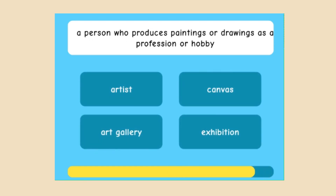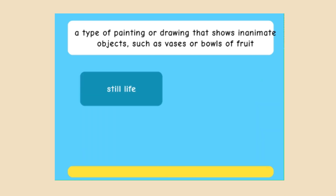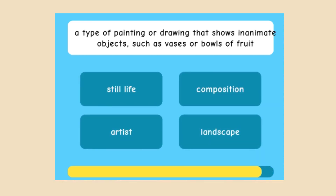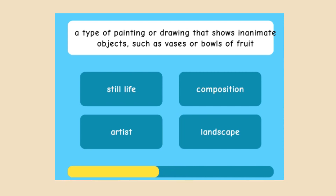A person who produces paintings or drawings as a profession or hobby — artist, canvas, art gallery, or exhibition? I'm sure you know this one. Artist is the correct one. A type of painting or drawing that shows inanimate objects such as vases or bowls of fruit — still life, composition, artist, or landscape? The Croatian translation would be Mrtva Priroda — still life in English.